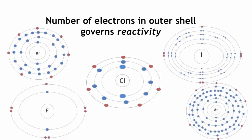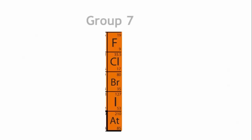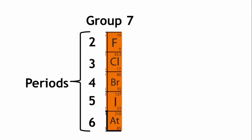The properties show a gradual change going down the group, as we go from period to period. If we look at group 7 again, we can see that they are each in a different period in the periodic table, telling us that each element in this group has its outer electrons on a different shell.